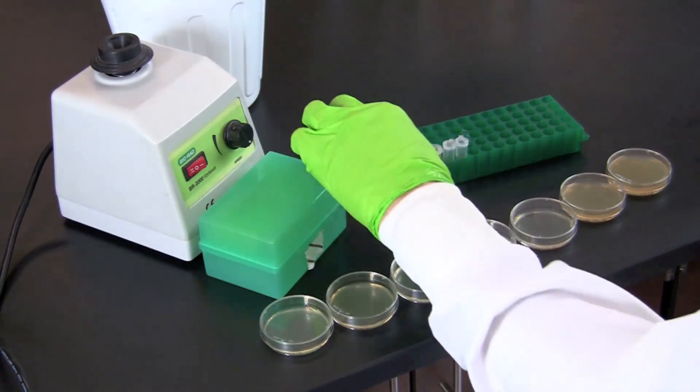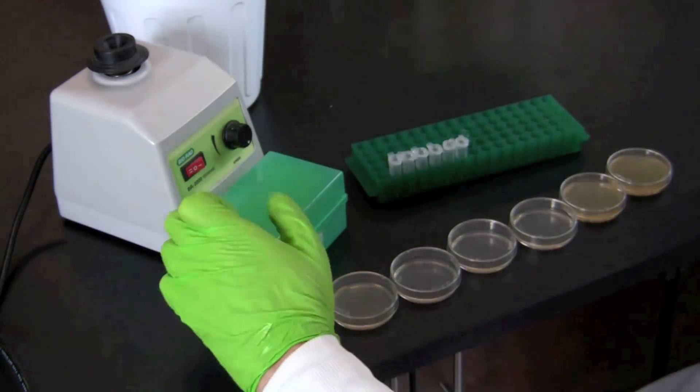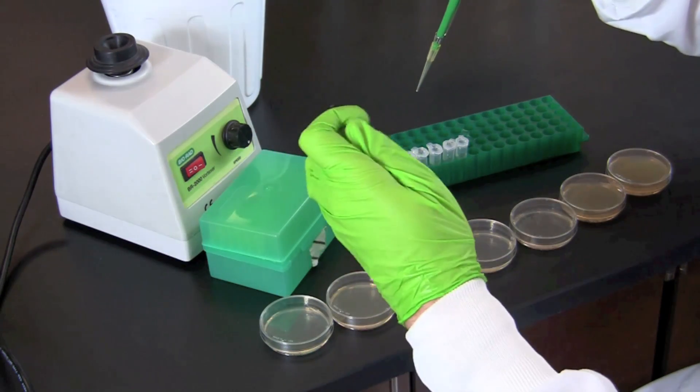Mix the diluted cell culture in the tube labeled 10 to the 1st and using aseptic technique, pipette 100 microliters onto the LB agar plate labeled 10 to the 1st.